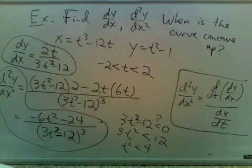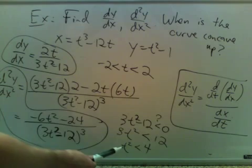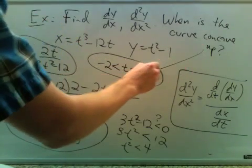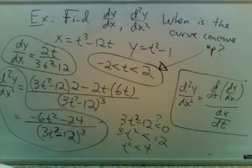Well, you know t has to be smaller than 2, but t can't be more negative than negative 2, or else you get something bigger than 4. So the curve is concave up there.